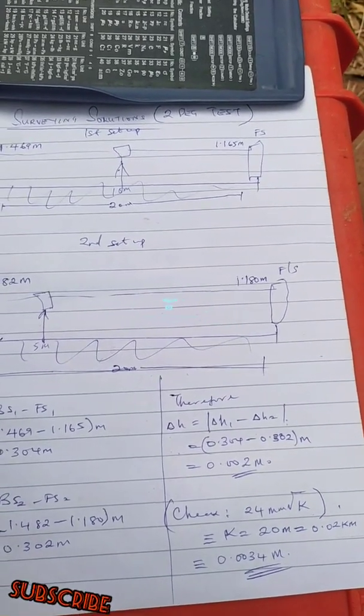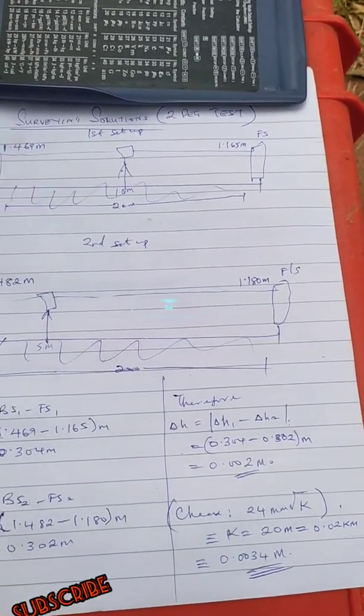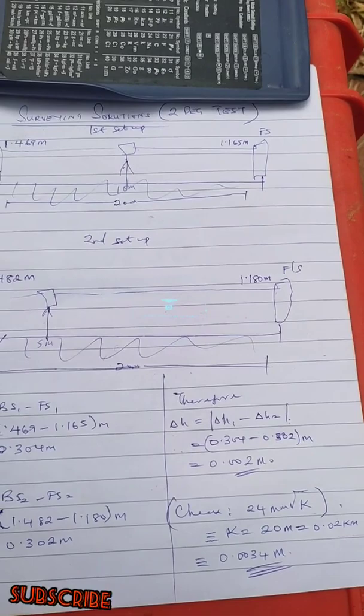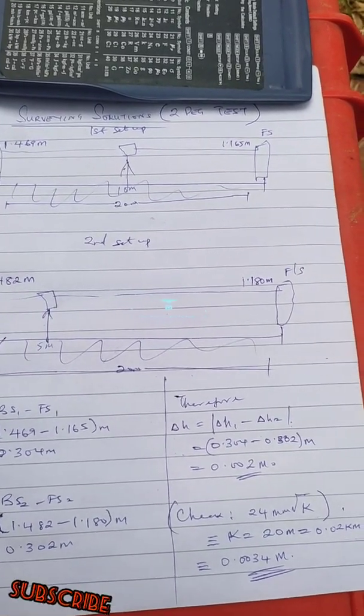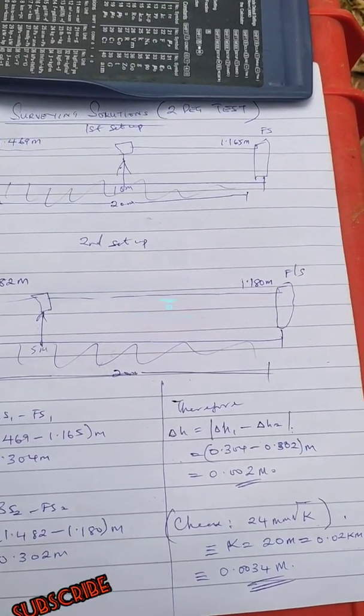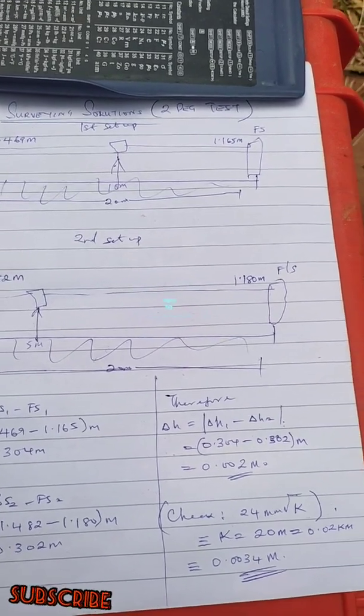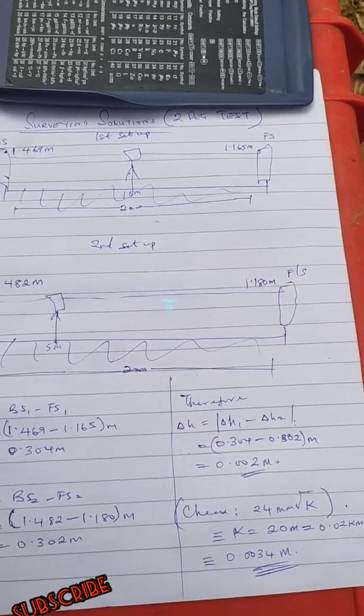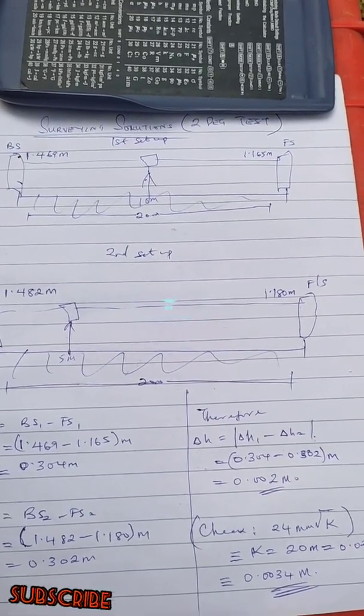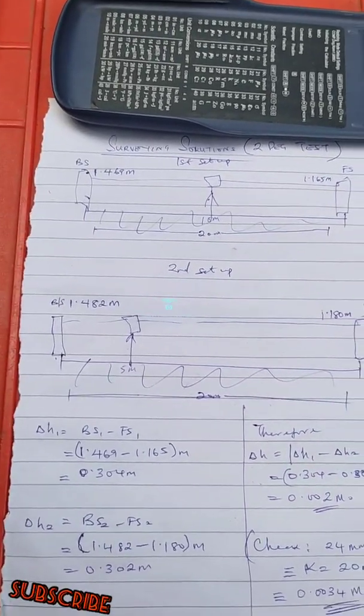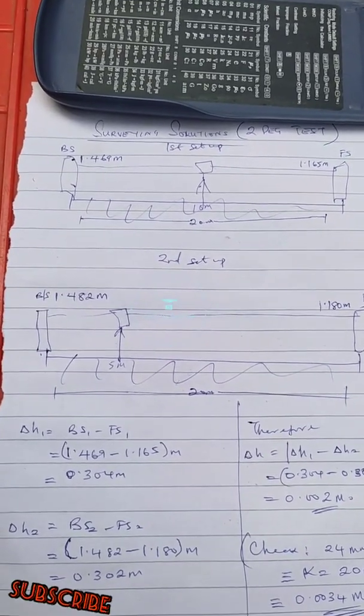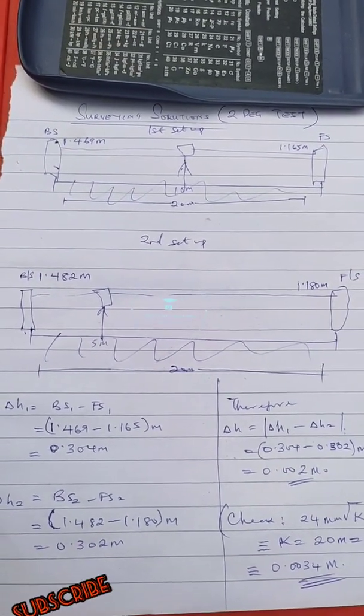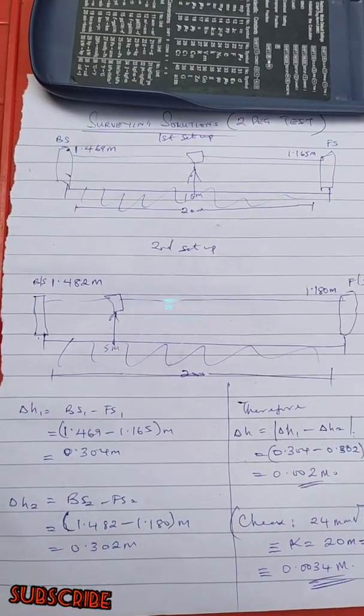So by the time you do your computation, you should be able to have 0.0034. So we see that the error we got, which is 0.002, is still within 0.0034, which means the leveling instrument is okay and it can be used for this particular or any form of leveling you would want to use it for.